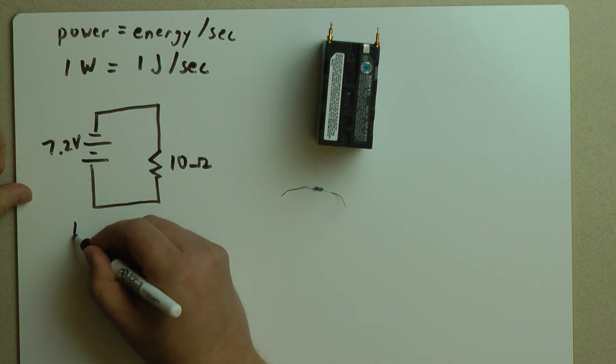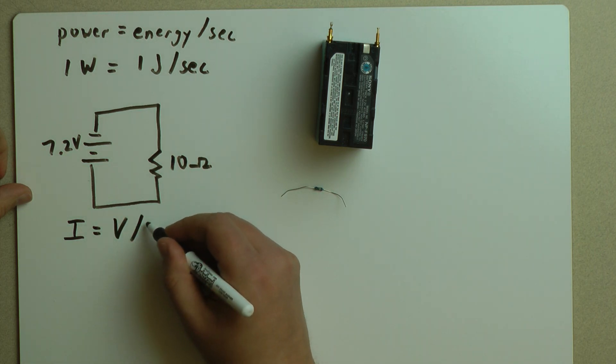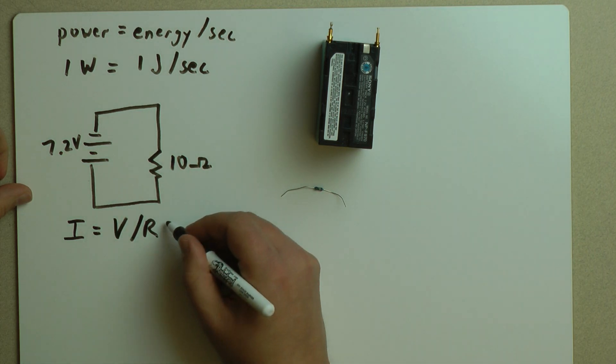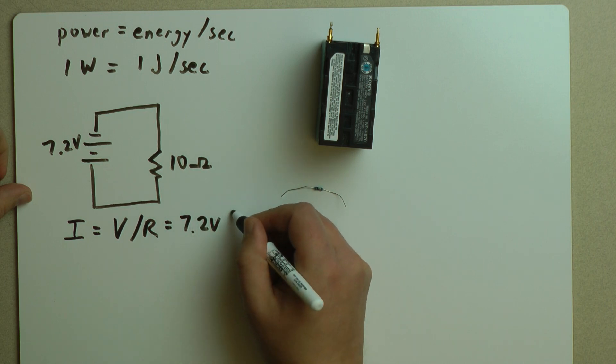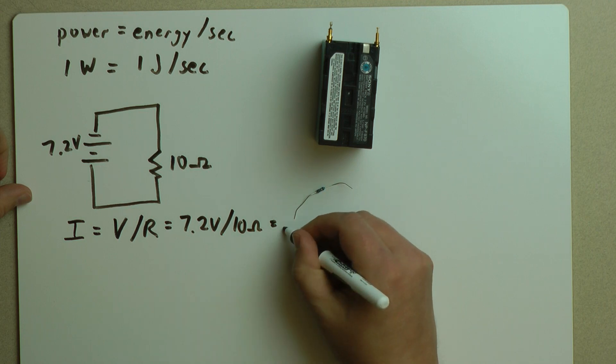Now how much power is this resistor going to consume when I put it across the battery? Well, let's take a look. We know that current, or I, is equal to voltage over resistance. Or in this case, 7.2 volts over 10 ohms, which is equal to 0.72 amps.